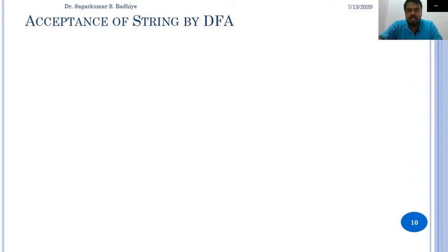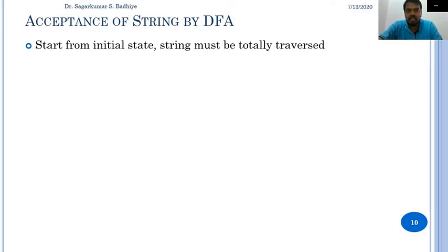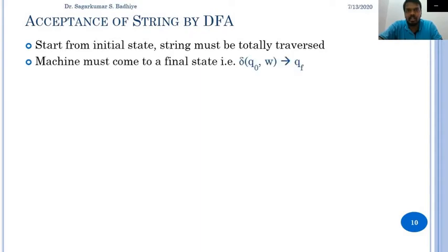In today's class we are going to discuss about the acceptance of a string by deterministic finite automata. For any string to be accepted by the deterministic finite automata, the finite automata must start in the initial state and read the complete string. After reading the complete string, if the automata ends in a final state, then the string is said to be accepted by the deterministic finite automata.